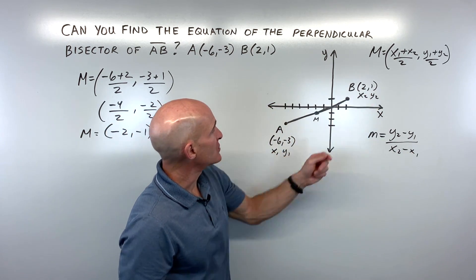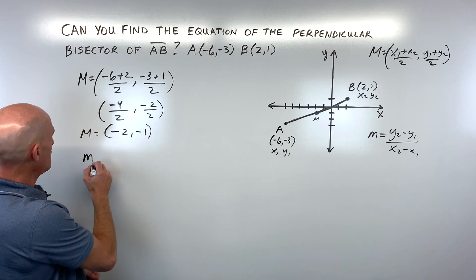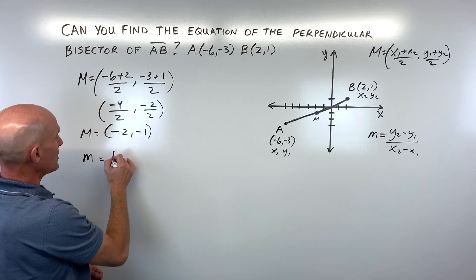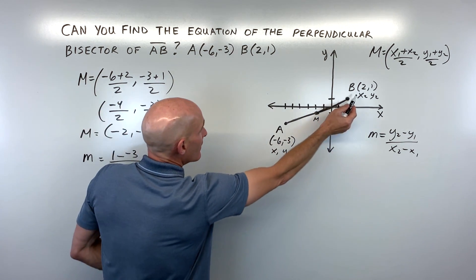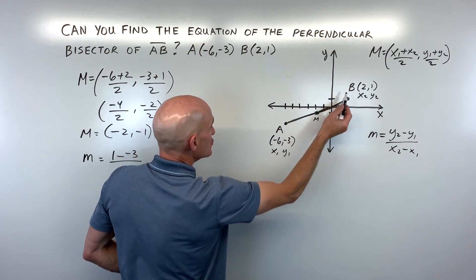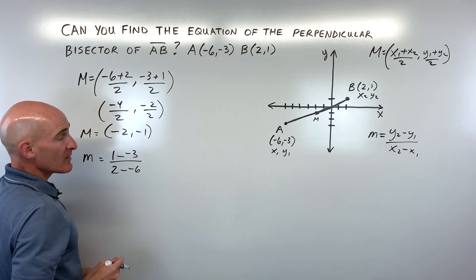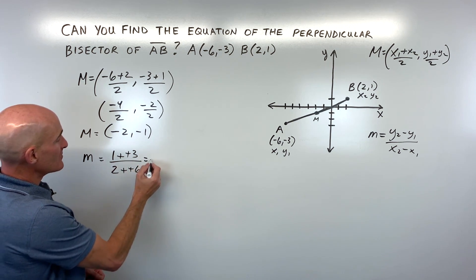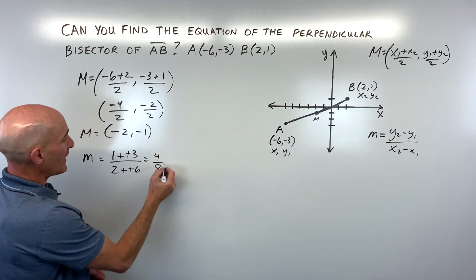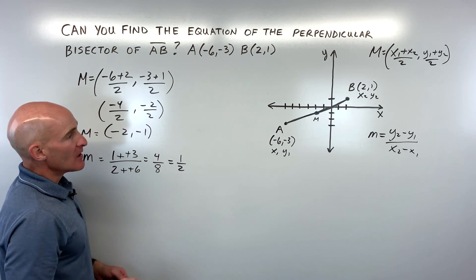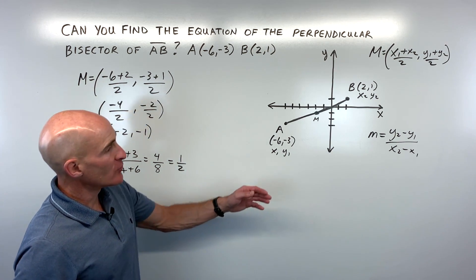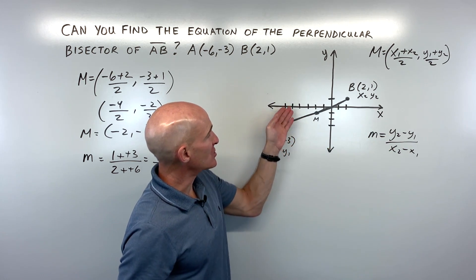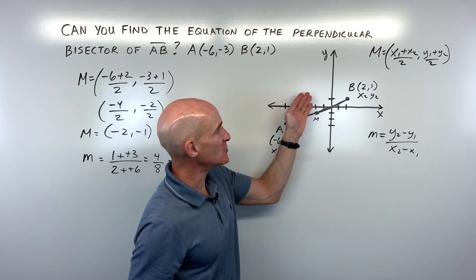So in this case, let's do that. So we've 2 minus y2. So that's 1 minus negative 3 divided by x2 minus x1. So 2 minus negative 6. Now remember when you subtract, it's like adding the opposite. So this comes out to 4 over 8, which is equal to 1 half. Now sometimes students make a little mistake. They put the x's in the numerator and the y's in the denominator. But when we think of slope, we're thinking of the change in y over the change in x, or it's the rise over the run.